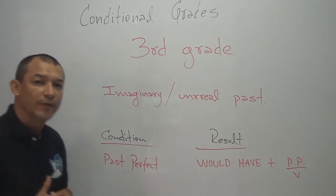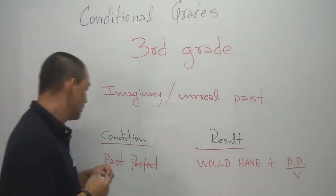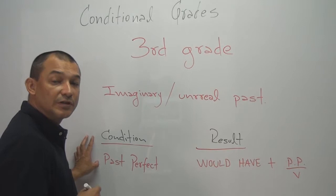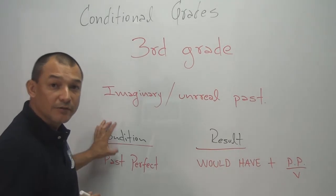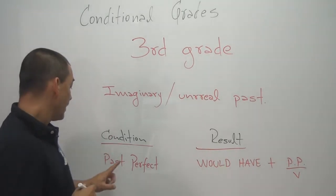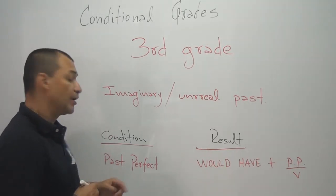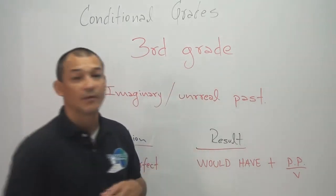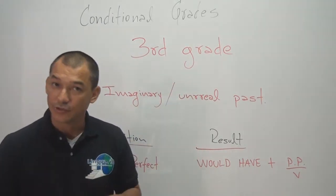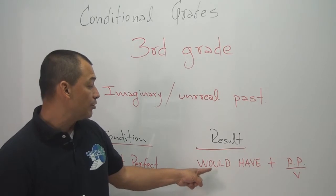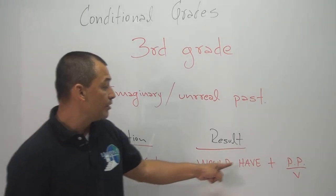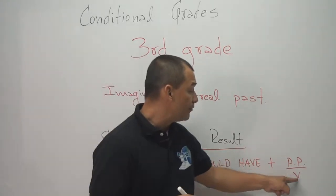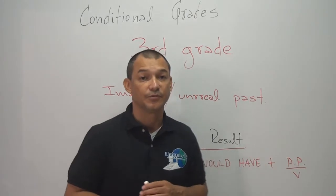¿Pero cómo lo formamos? Vamos a tenerlo en cuenta primero. La primera acción, que es la parte donde va la condición, la vamos a construir en pasado perfecto. Y el resultado, la segunda acción, la vamos a construir con 'would have', seguido de un verbo en pasado participio.